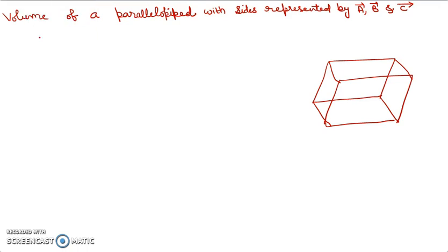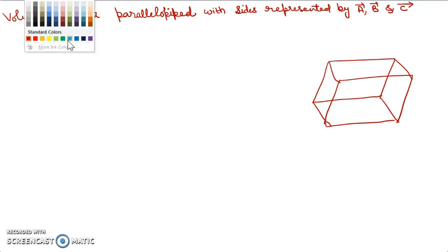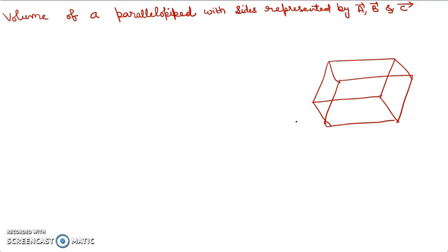Volume of a parallelepiped with sides represented by three vectors a, b, and c. Let us consider a parallelepiped whose three adjacent sides are represented by three vectors a, b, and c, as shown in the diagram. All three vectors are acting at the same point. Now we will find this parallelepiped's volume.